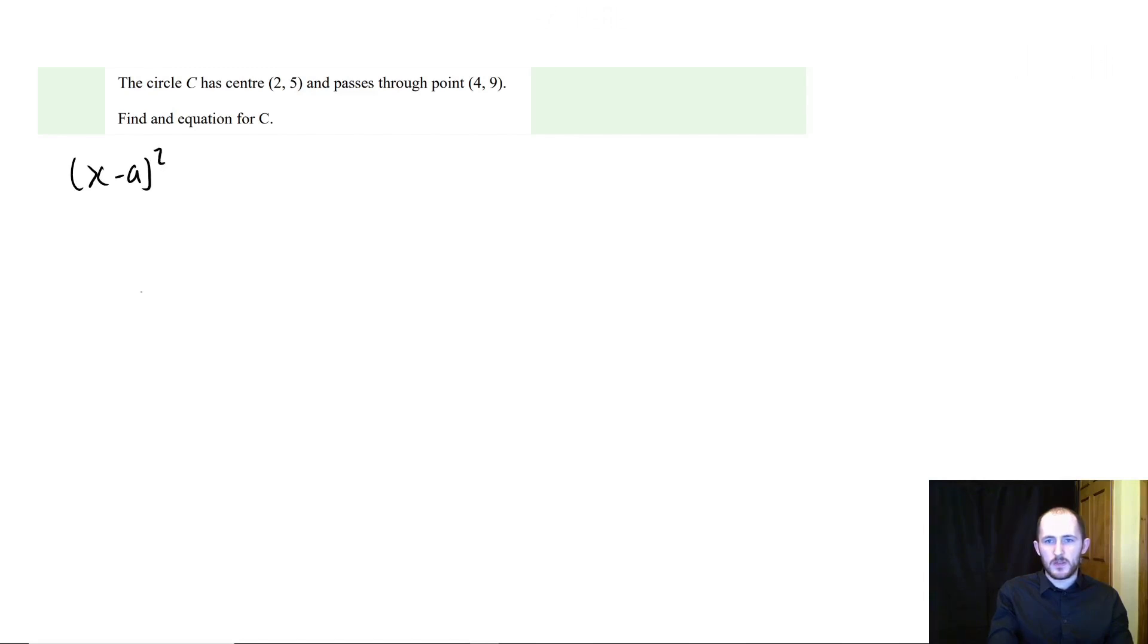So once again, I'm just going to write out the equation of a circle. Hopefully I'm kind of trying to brainwash you here. I just want you to definitely remember this, at least at the end. Now, what we know is that we know the center, right? So a is going to be minus 2 and b is going to be minus 5 because we have to flip the sign.